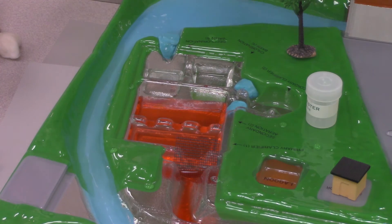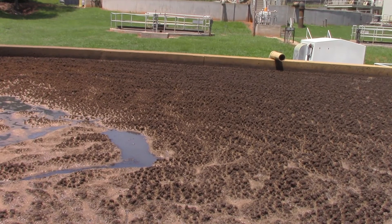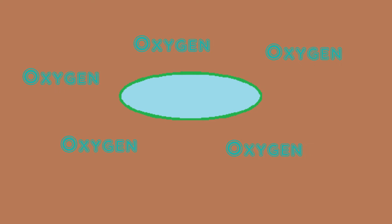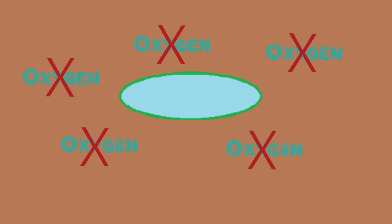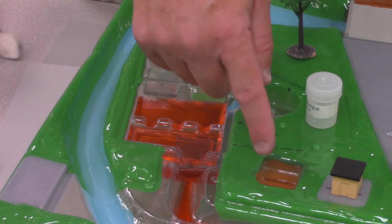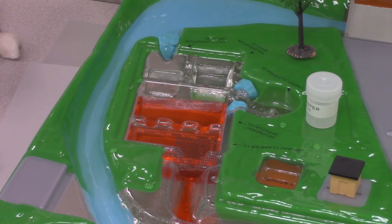Going back to the anaerobic digester, the lagoon sludge taken from the clarifiers can go into the anaerobic digestion system, where anaerobic bacteria convert the organics into methane and carbon dioxide. These bacteria work without the presence of oxygen — they don't need oxygen to break down the organic material. The methane produced can be used back in the plant as fuel if it is clean enough, or it can be put into our incinerator on site, which burns the solid material using the methane or another outside fuel source.